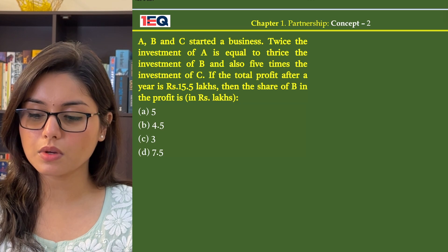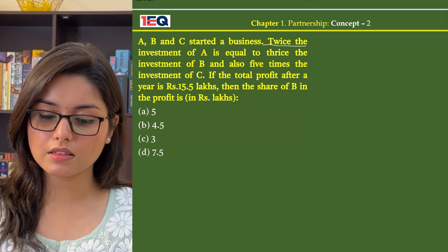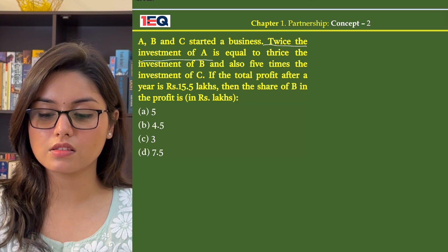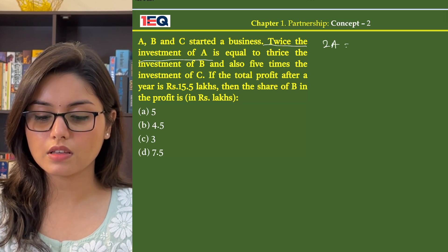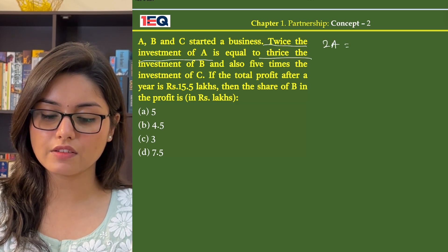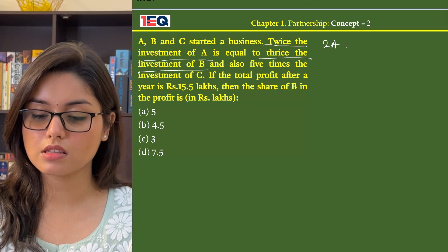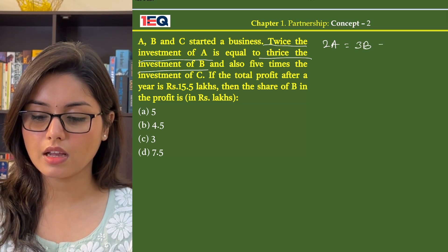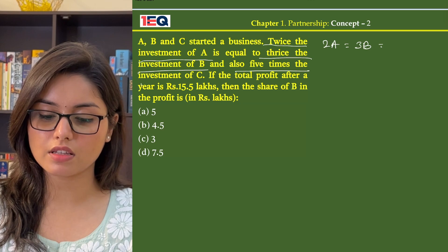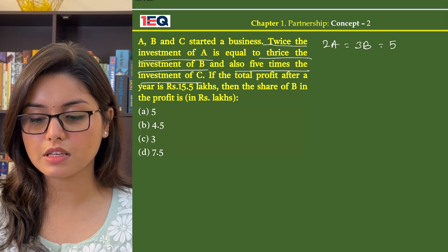So in the given question, we know that twice the investment of A, that is 2A, is equal to thrice the investment of B, that is 3B, and five times the investment of C. That means 5C.